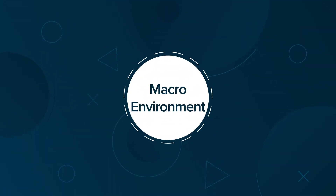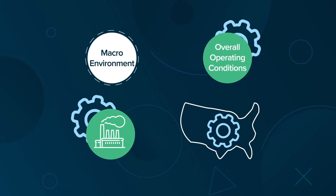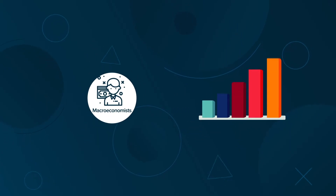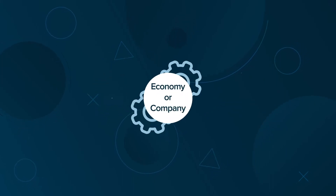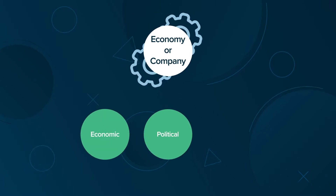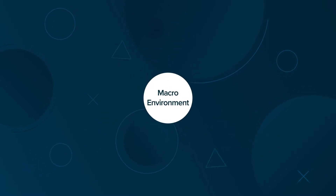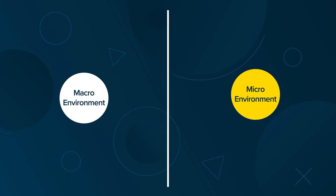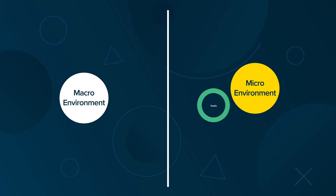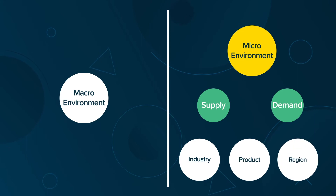Macro-environment refers to the overall operating conditions for an industry or country. Macro-economists use different statistics and measures to evaluate factors that might affect performance of an economy or company, including all relevant economic, political, and technological factors. Macro-environment is different from micro-environment, which refers to the supply and demand fundamentals of a single industry, product, or region.